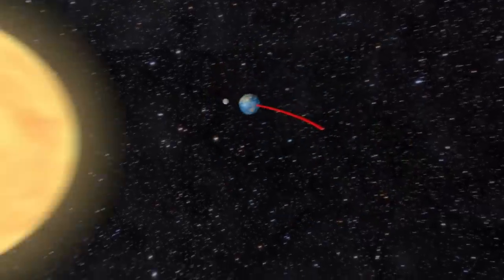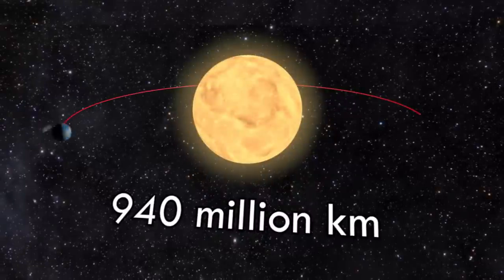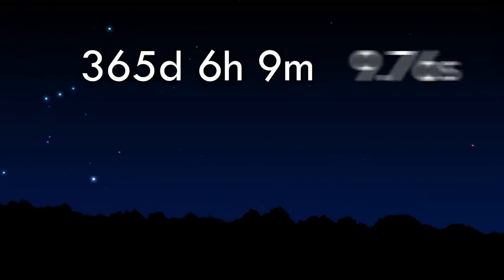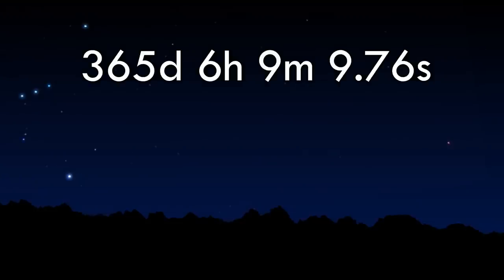And Earth itself has traveled 940 million kilometers around the Sun. During our trip around the Sun, the position of the stars in the sky changes from night to night. The amount of time it takes a star or constellation to reach the same point in the sky at the same time of day is 365 days, 6 hours, 9 minutes, 9.76 seconds—or a sidereal year.